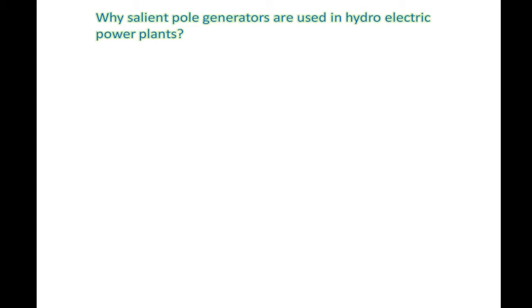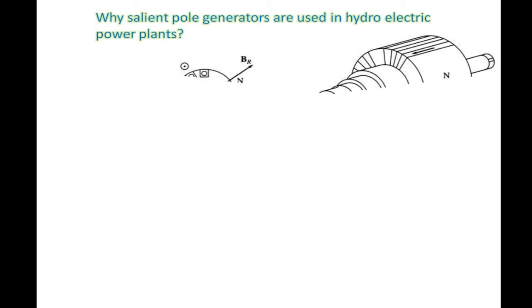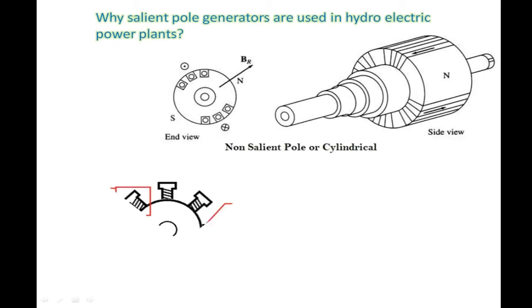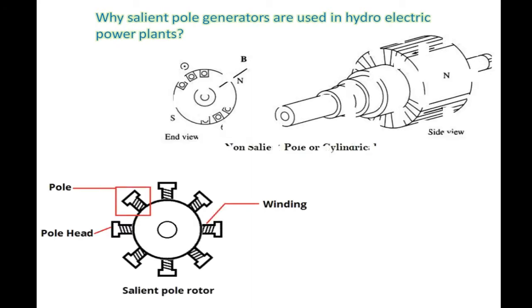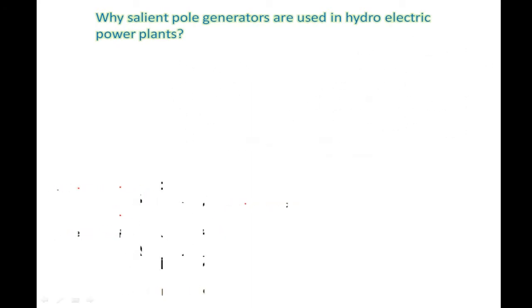Let's first have a look at the structures of both cylindrical and salient pole rotors. This is a cylindrical rotor, or non-salient pole rotor, and this is a salient pole rotor.